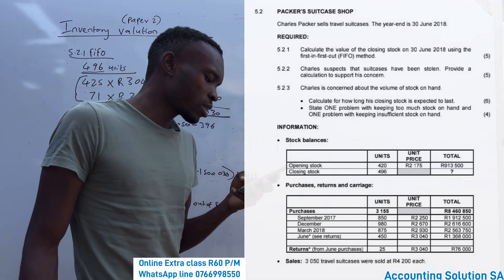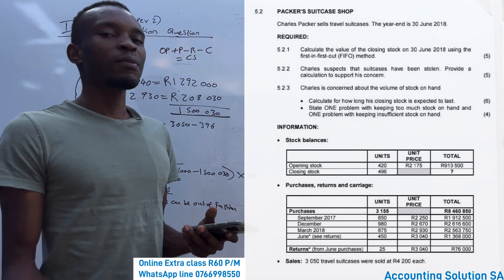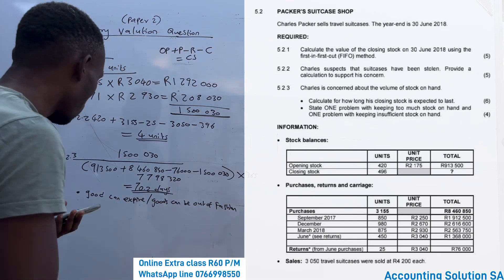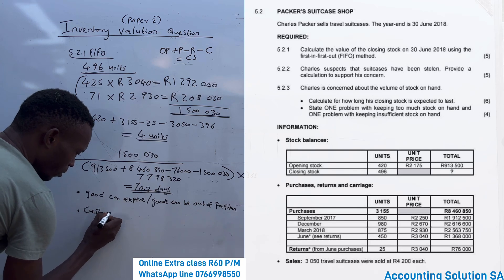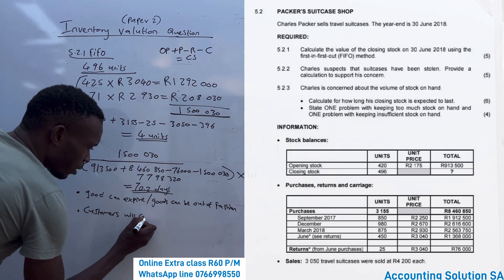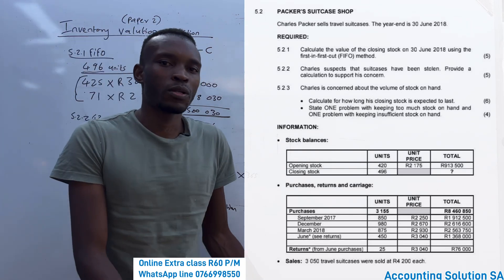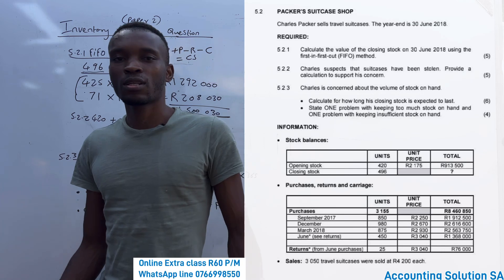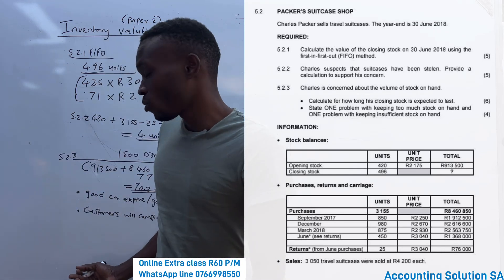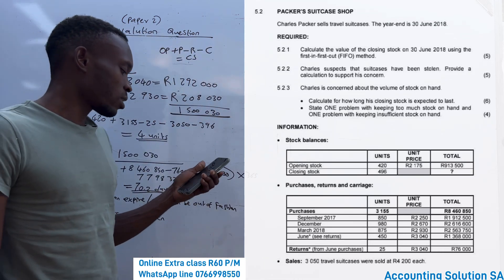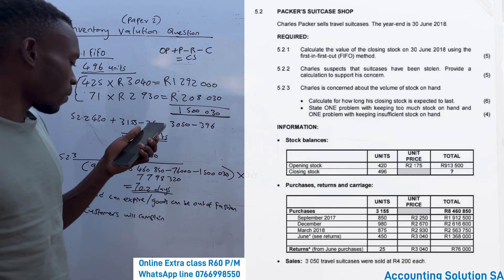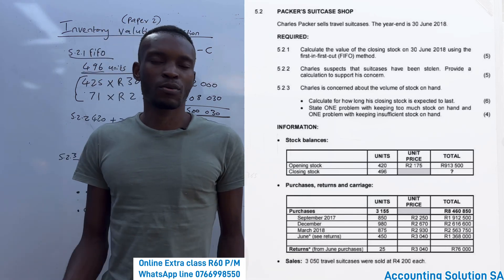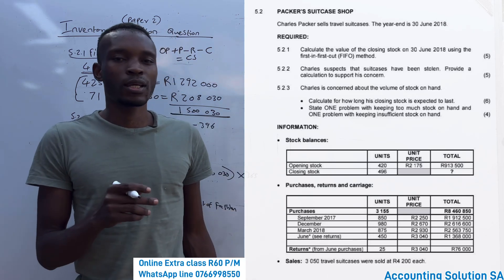For the problem with keeping insufficient stock on hand: obviously, customers are going to complain. Imagine every day you go to the shop and they tell you they don't have stock, and the next day the same thing happens — eventually you will not go back and will take another option. The business will lose income because customers are not buying due to insufficient stock.